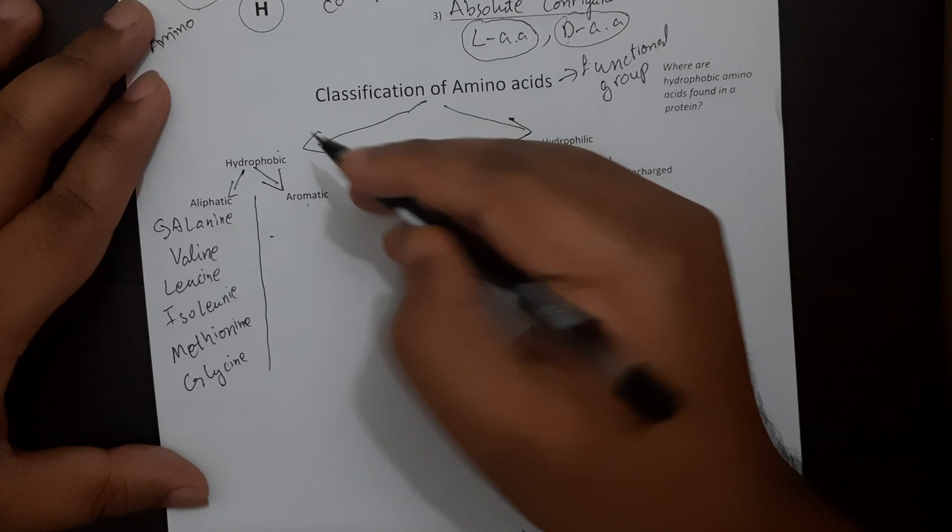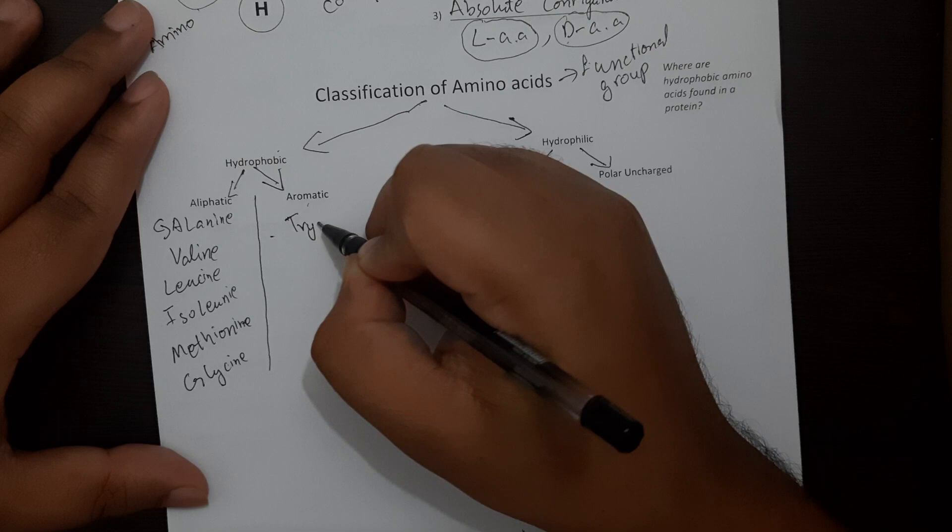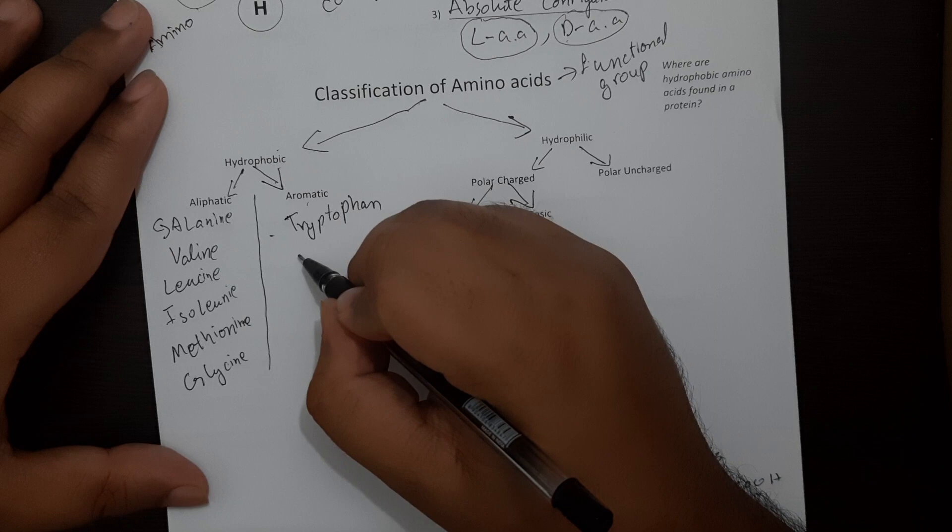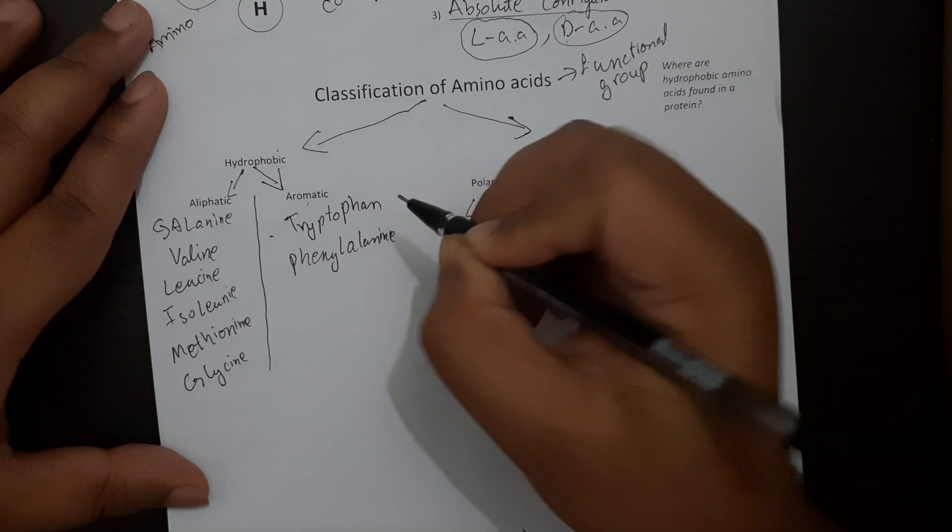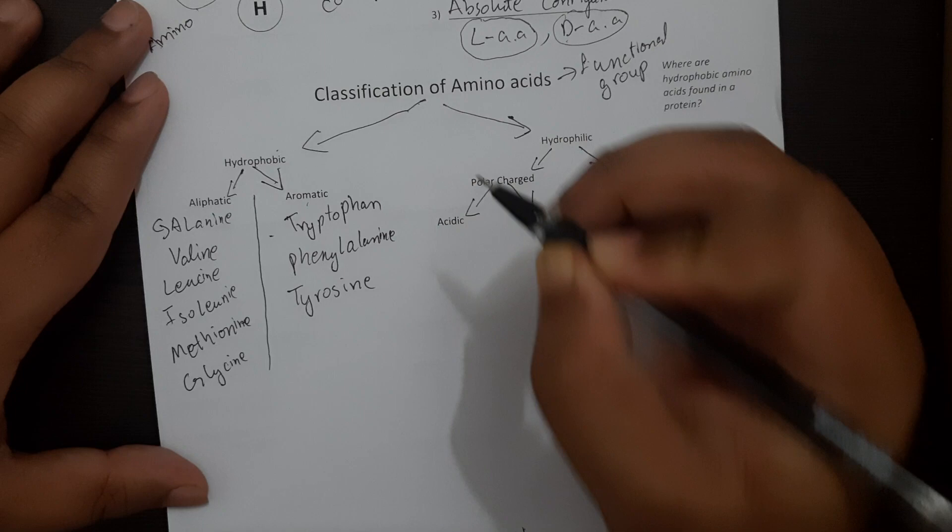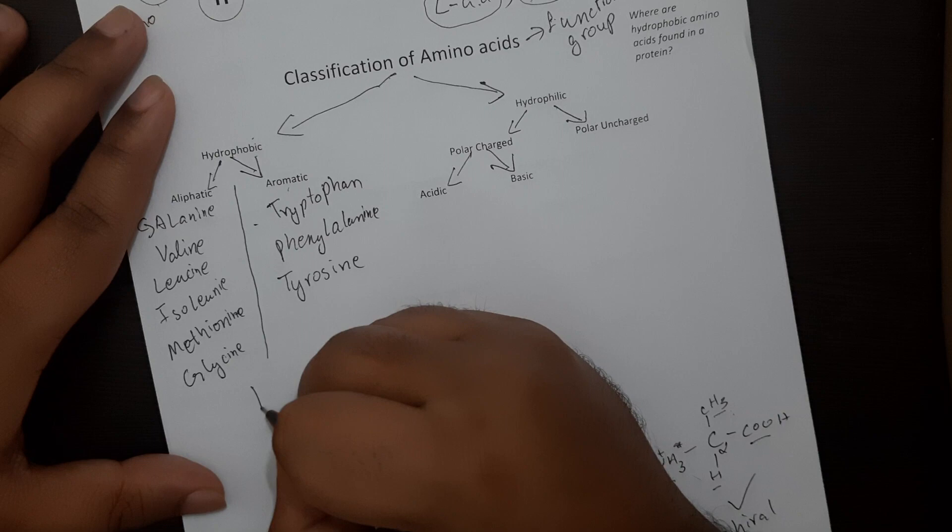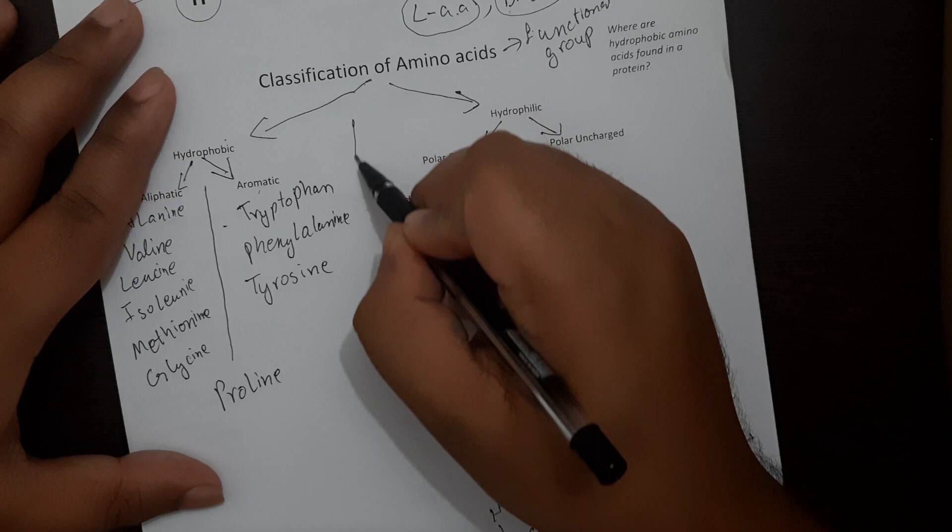The next one would be your aromatic hydrophobic amino acids which include tryptophan, phenylalanine and tyrosine. These are your aromatic hydrophobic amino acids. Now there's an outlier here which is known as proline. You'll understand why it's an outlier once you learn the structure of it.